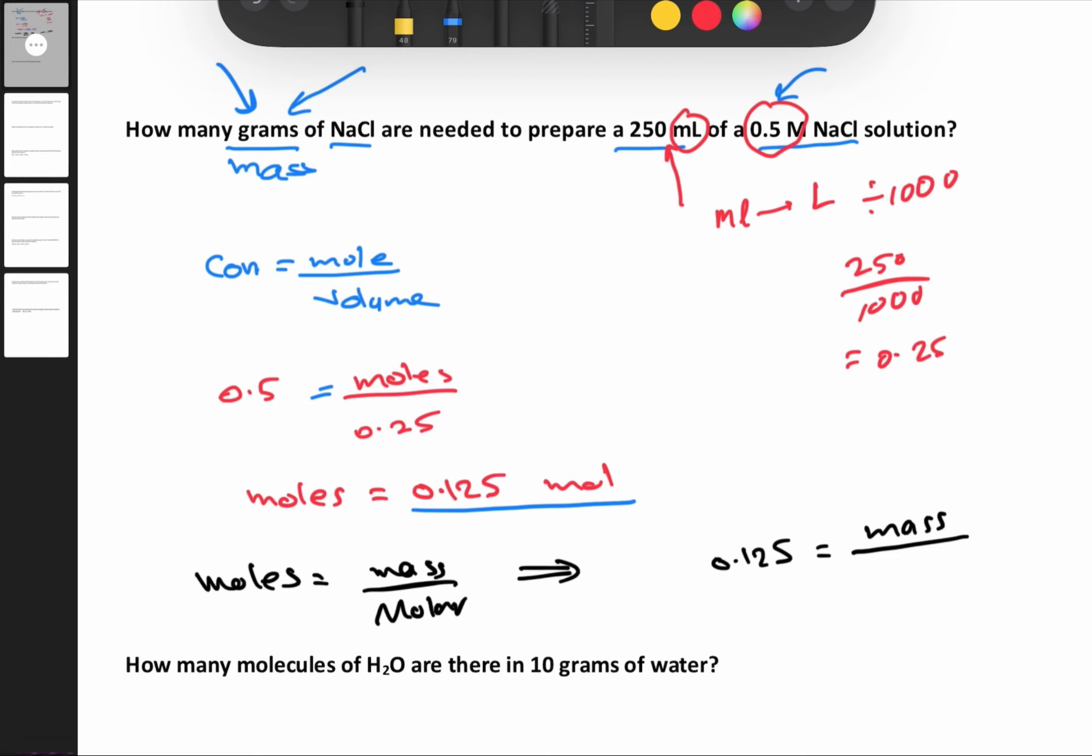How do we calculate the molar mass of NaCl? Let's go to the periodic table. NaCl has 23 for Na and 35.5 for Cl, which equals 58.5. Now we make a cross multiplication.